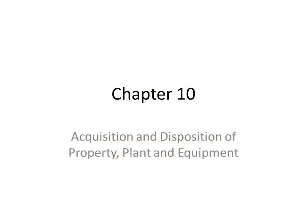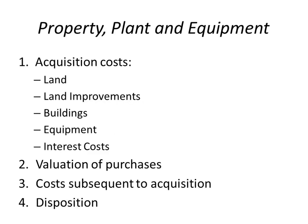All right, so chapter 10: property, plant, and equipment — the acquisition and disposition of property, plant, and equipment. When you talk about property, plant, and equipment, we're talking about a whole plethora of different items. This is what we're going to focus on today: acquisition costs for land, land improvements, buildings, and equipment, and how interest costs fit into that equation. We'll figure out how to value purchases, what happens when you incur costs subsequent to acquisition, and ultimately when you dispose of your fixed assets.